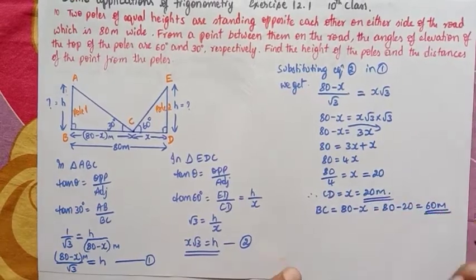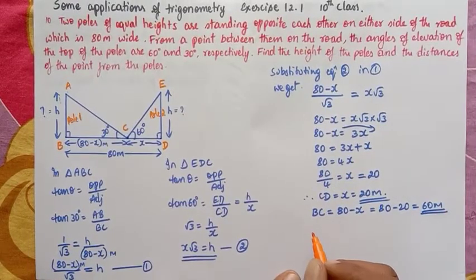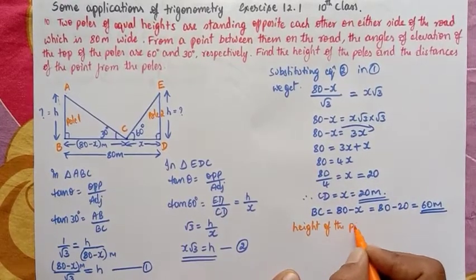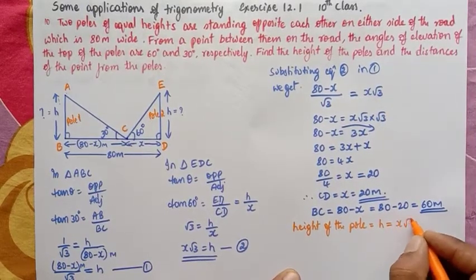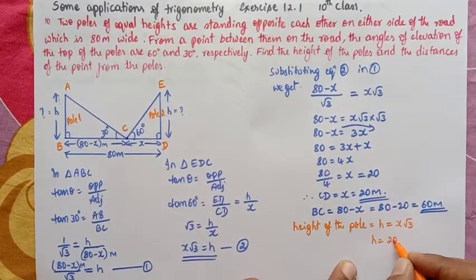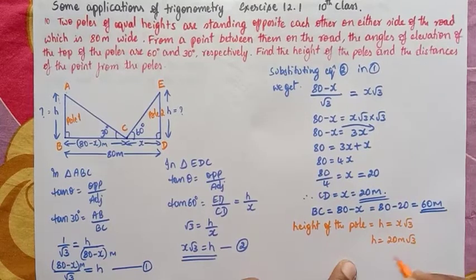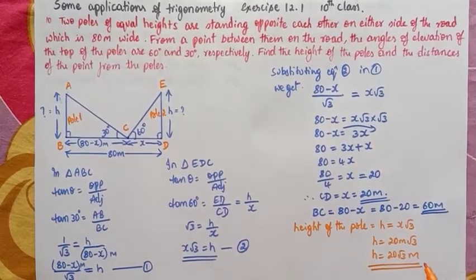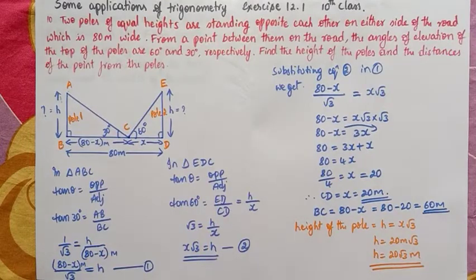Now let us calculate the height of the pole. Height h = x√3 = 20 × √3 = 20√3 meters. This is the height of both poles since they are of equal length. This completes this problem.